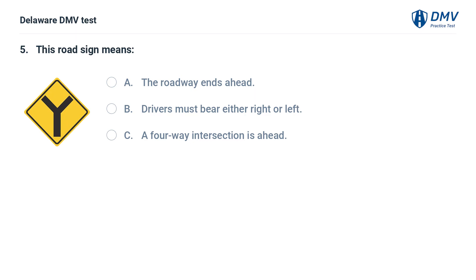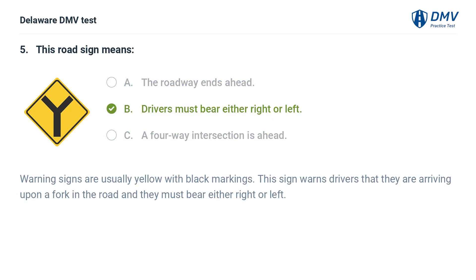This road sign means: A. The roadway ends ahead. B. Drivers must bear either right or left. C. A four-way intersection is ahead. Answer: B. Drivers must bear either right or left. Warning signs are usually yellow with black markings. This sign warns drivers that they are arriving upon a fork in the road and they must bear either right or left.